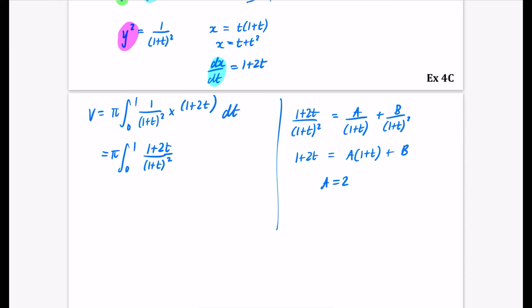So I can do some comparing coefficients. I can clearly see that A is going to be equal to 2. This is when I compare t because I have 2t here and nothing there. So A equals 2. If I compare the constants I have 1 on the left and I have A plus B. So 1 equals 2 plus B. So B is equal to minus 1.